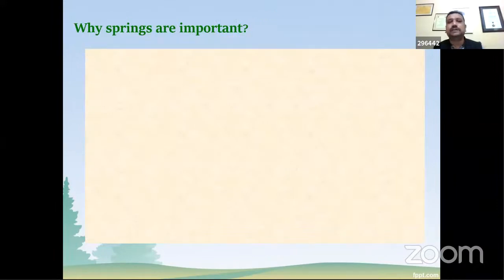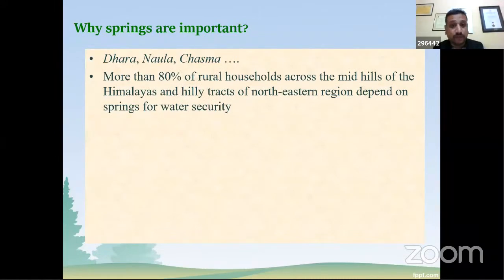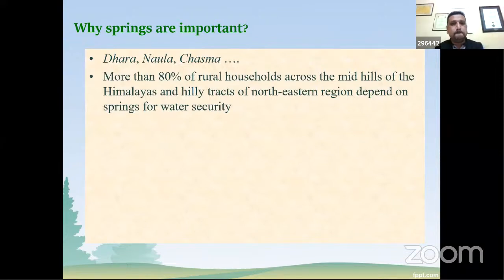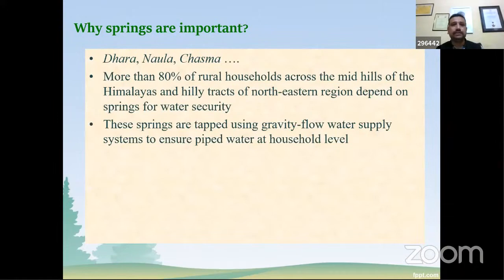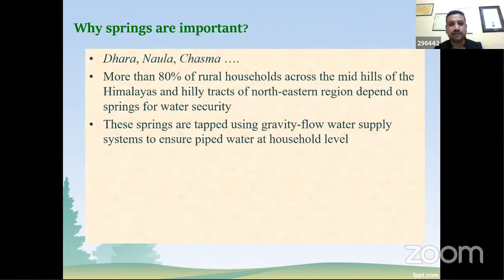Why are springs important? In Sikkim they're called Dharavikas; in other parts of India they're called Nala, Chasma, or other local names. When I talk about mountain communities, I mean those inhabiting the midhills — the habitable zone. About 80% of midhill people depend on springs. We've depended on springs since our forefathers' time. These springs are groundwater, and since they're located on a slope, they can be tapped using piped water or a gravity flow system.